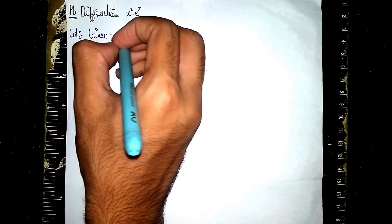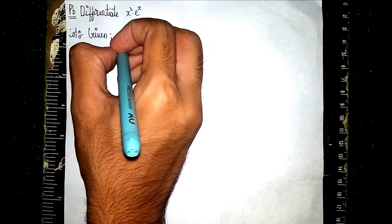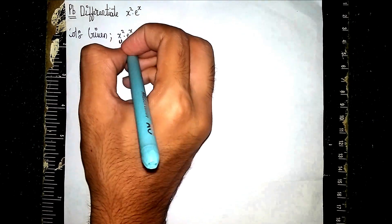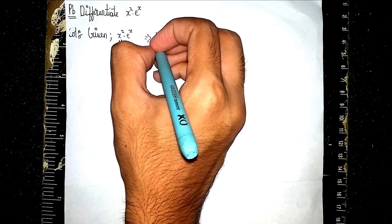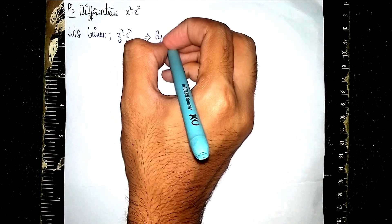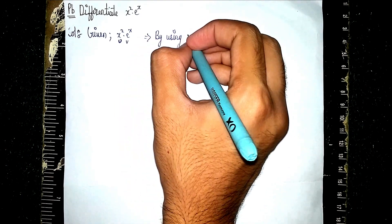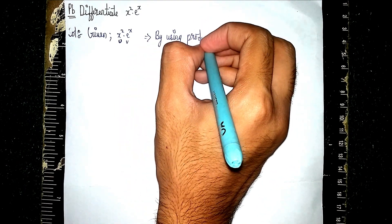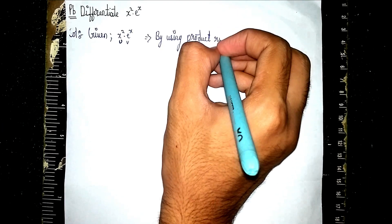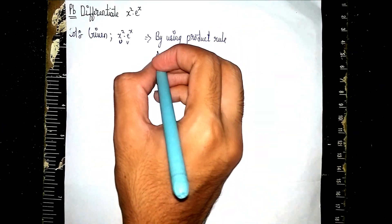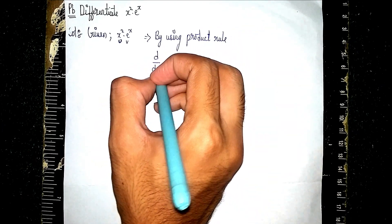x² · e^x. Now I'm using the product rule. This is u, this is v. So, writing here: by using product rule. What is the product rule? It tells us how to differentiate.